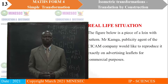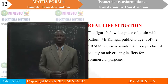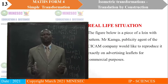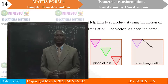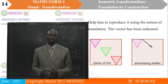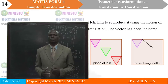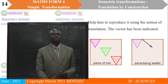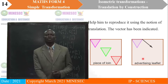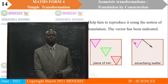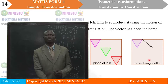Real life situation: the figure below is a piece of a fabric with a line pattern. Mr. Kanga is the publicity agent of Sikam Company and would like to reproduce it exactly on advertising leaflets for commercial purposes. Help him to reproduce it using the notion of translation. The translation vector has been indicated, and we want to use it to reproduce the pattern from the fabric onto the leaflet.